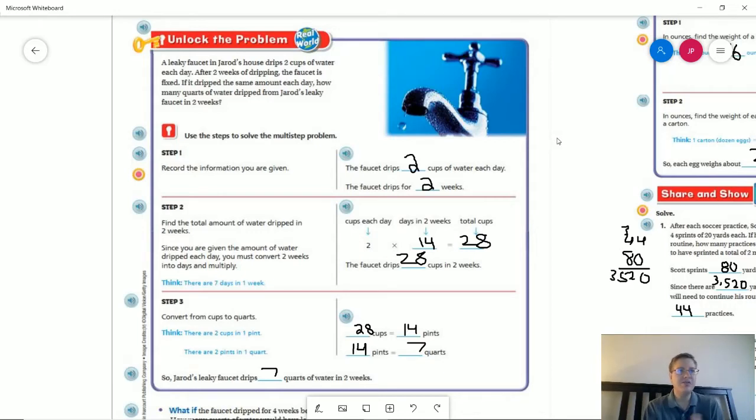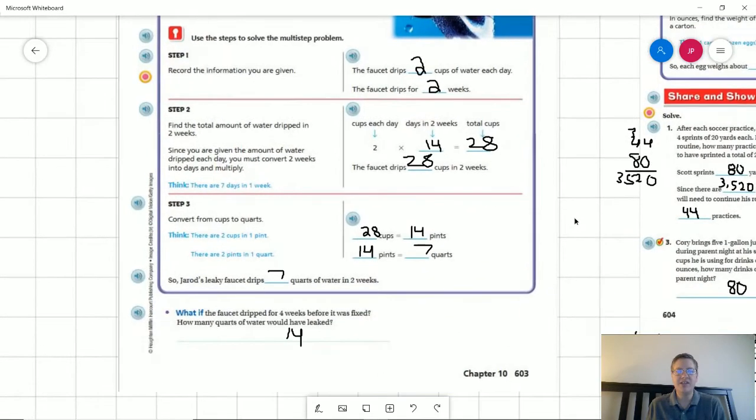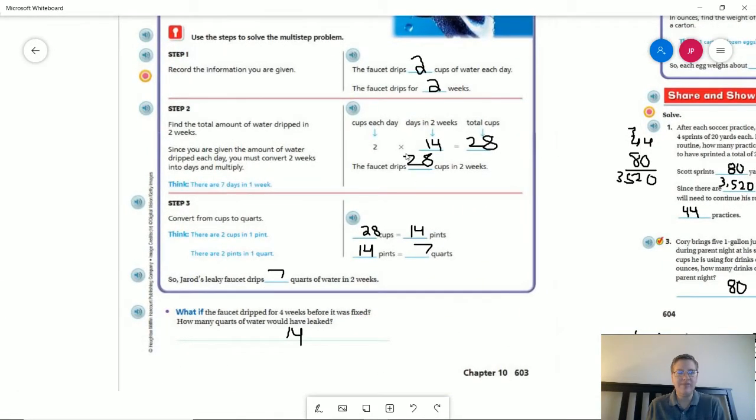So two cups of water each day, we have two weeks of drippings so that's gonna cover the first two questions. We have 14 days in two weeks so we can do 2 times 14 to get 28. Now we want to figure out how to get from cups to quarts. So we have 28 cups. There are two cups in one pint so we can divide this by 2 to get 14 and then there are two pints in a quart so we can do this divided by 2 to get 7.